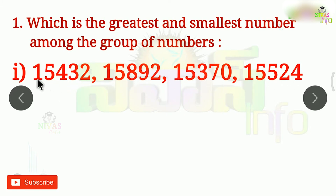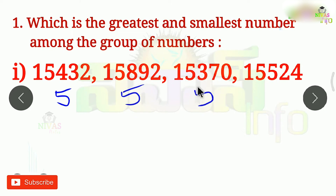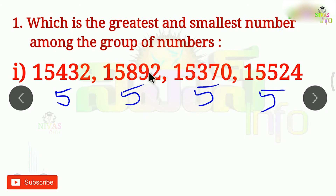Counting the digits: 1, 2, 3, 4, 5 — there are 5 digits. Each number has 5 digits. What is your digit count? The decision is 5. If you have 5 digits, you will start with 10,000. So the place value is 10,000.